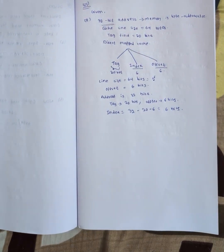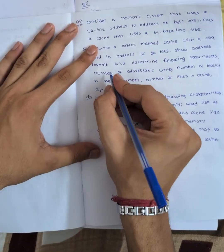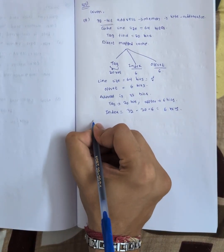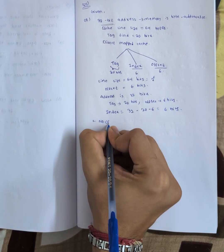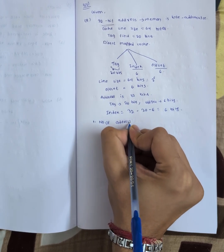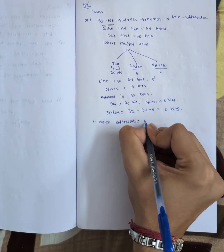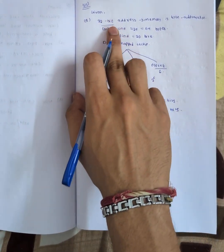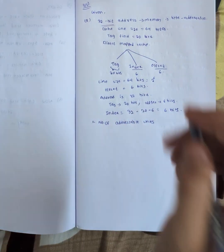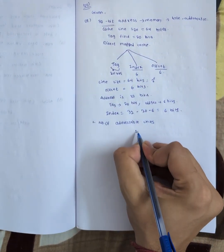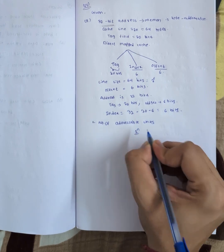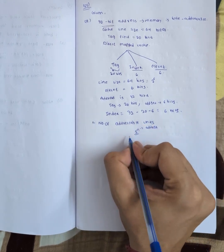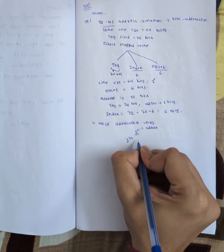Now let's answer the sub-parts. First: number of addressable units. Since the address is 32 bits, the formula is 2 power n where n is the number of address bits. So it is 2 power 32, which equals 4 GB.